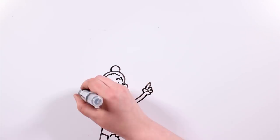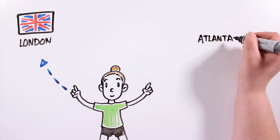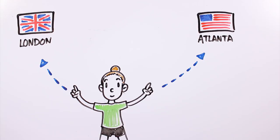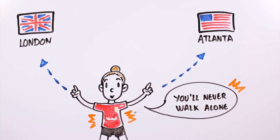As for her personal life, Millie lives between London, where she lives with her family, and Atlanta, US, where the shooting of Stranger Things takes place. She supports Liverpool Football Club, same as her dad and her brother.